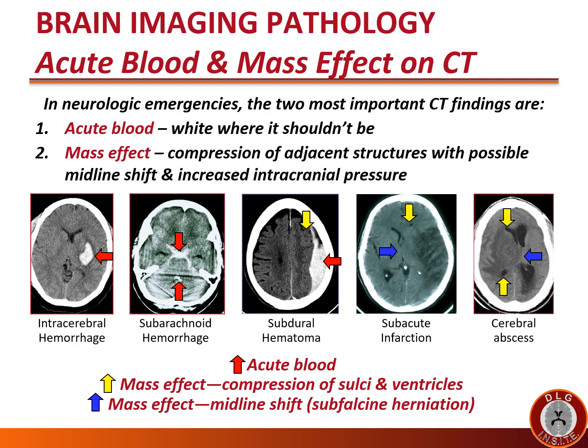Looking at the images from left to right: in the first image, the red arrow points to a ball of white in the middle of the parenchyma — this is called an intracerebral or intraparenchymal hemorrhage. In the second image, the red arrows point to white substance within CSF structures, cisterns, and fourth ventricle — this is subarachnoid hemorrhage. In the third image, the red arrow points to white outside the brain between the skull and the brain — this is a subdural hematoma — and the yellow arrow points to compression of sulci adjacent to the subdural hematoma, which is mass effect.